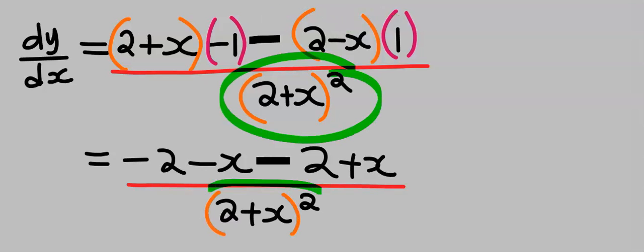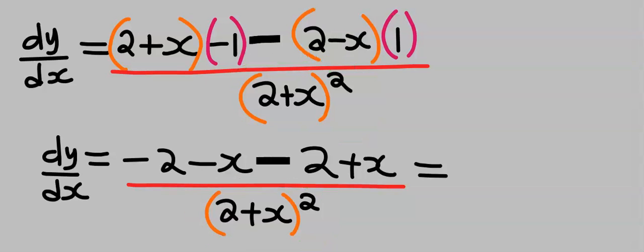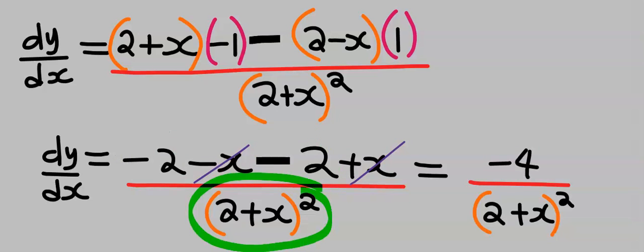And the denominator remained unchanged. Next, minus x we cancel out plus x, and minus 2 minus 2 will give you minus 4. And the denominator remained unchanged.